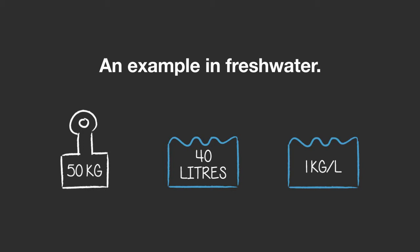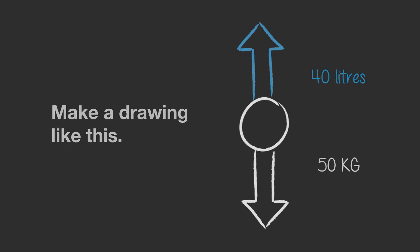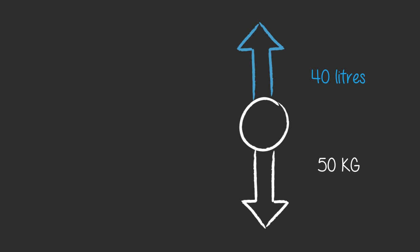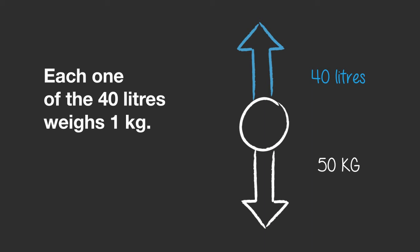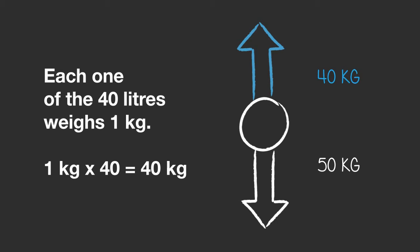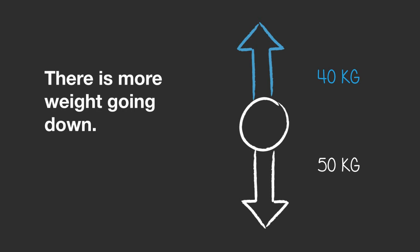Let's start off with an example in freshwater. An object weighs 50 kg and displaces 40 liters. Make a drawing like this: pulling down is 50 kg and pushing up is 40 liters. Each of those 40 liters weighs 1 kg, so 40 times 1 kg equals 40 kg. So 50 kg is going down and 40 kg is going up — there's more weight going down, so the object sinks.